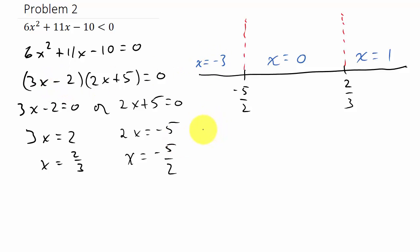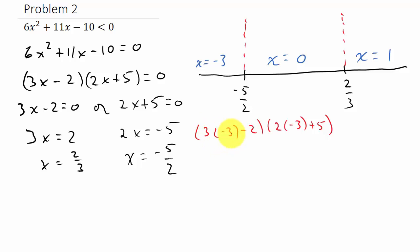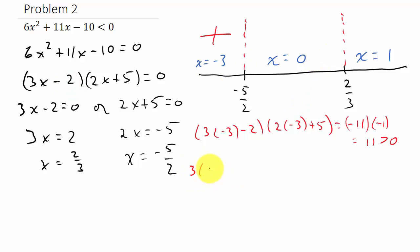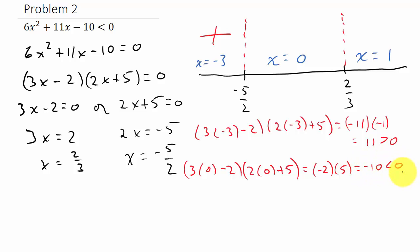Plugging in negative 3: (3 times negative 3 minus 2)(2 times negative 3 plus 5) equals (negative 9 minus 2)(negative 6 plus 5) equals negative 11 times negative 1, which equals 11, greater than 0 — so this region is positive. Plugging in 0: (3 times 0 minus 2)(2 times 0 plus 5) equals negative 2 times 5, which is negative 10, less than 0 — so this region is negative.